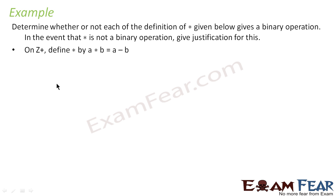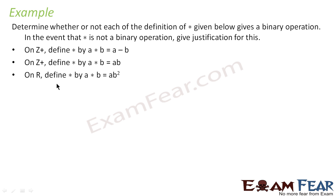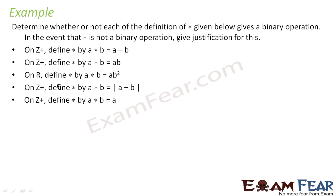We need to determine whether each definition is a binary operation or not. The first one is a * b = a - b for all positive integers Z+. However, it can happen that a - b is negative. For example, if a = 5 and b = 7, then a - b = -2, which is not in Z+. So this is not a binary operation.